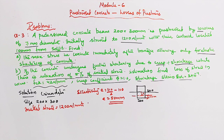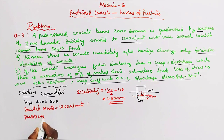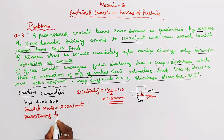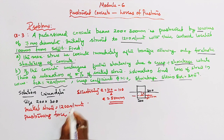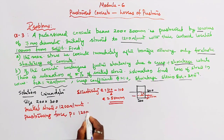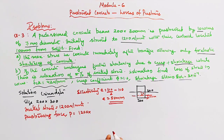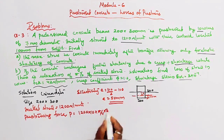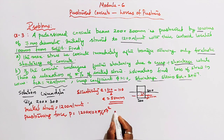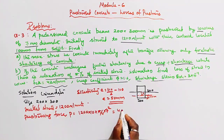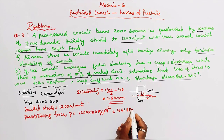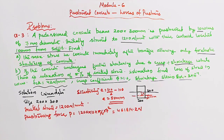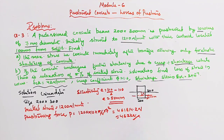We find the pre-stressing force P. P equals stress × area of wire. Area of 7 mm diameter wire = π/4 × 7² = 38.48 mm². For 10 wires: P = 1200 × 38.48 × 10 = 462 kilo Newton.